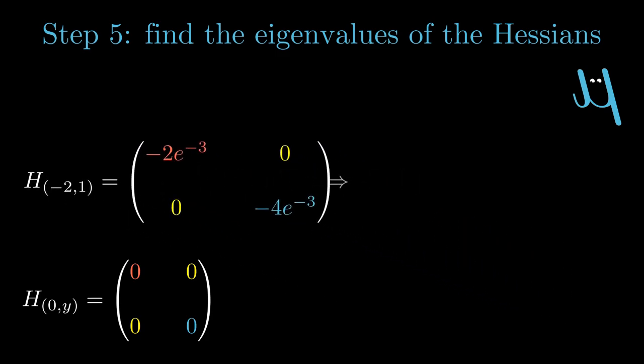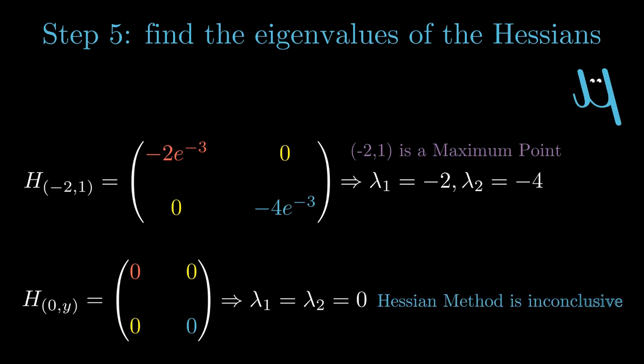For the first point, we have negative eigenvalues, and therefore we can say that it is a maximum point. End of the story. For the second, instead, we have null eigenvalues, and therefore, unfortunately, the Hessian method is inconclusive.